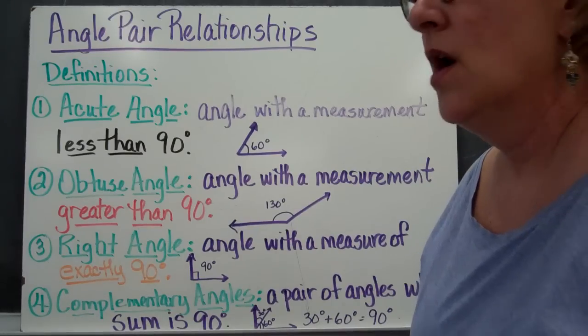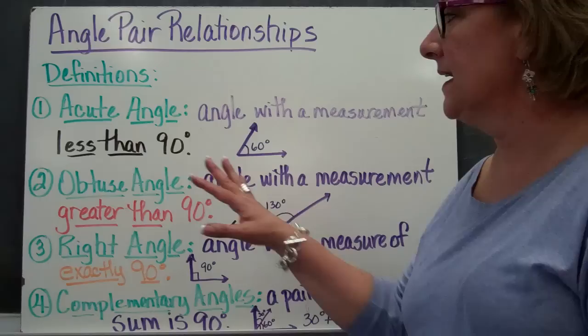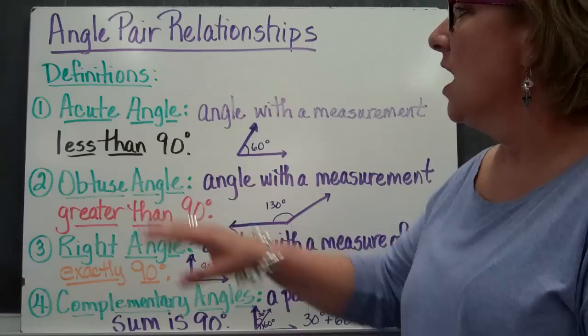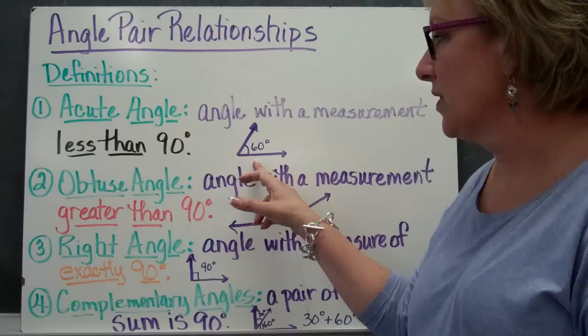We're going to be talking about angle pair relationships, and we're going to be looking at some definitions that we might already know, but we're going to review them. An acute angle is an angle with a measurement that is less than 90 degrees, so it will be less than the 90-degree angle that we're used to seeing. So this is 60 degrees, therefore it's called an acute angle.